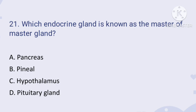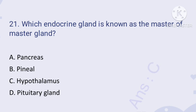Question number twenty-one: which endocrine gland is known as the master of the master gland? We know that the pituitary is called the master gland. The master of the master gland is the hypothalamus, because the hypothalamus controls the pituitary gland. So hypothalamus is popularly called the master of the master gland.